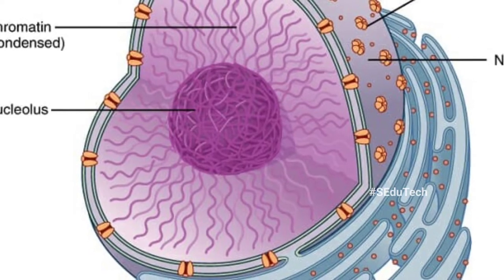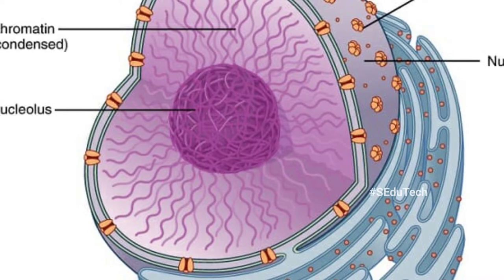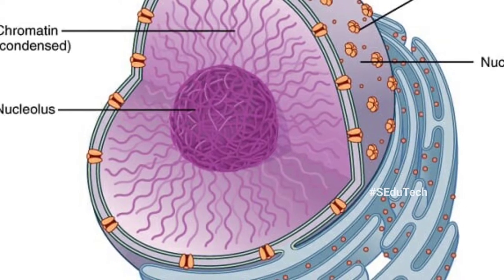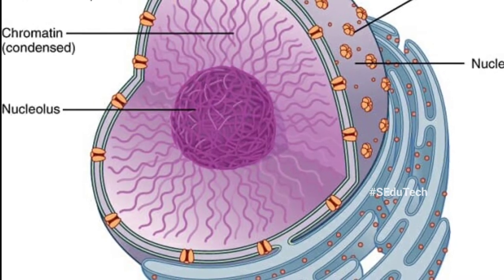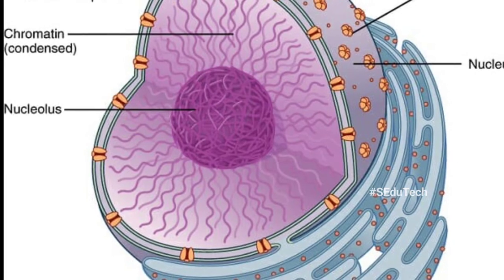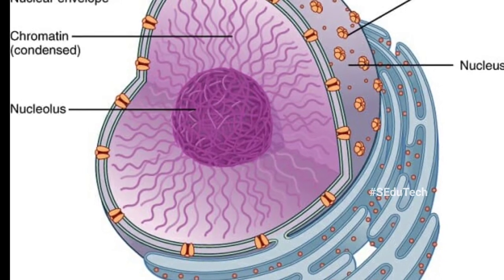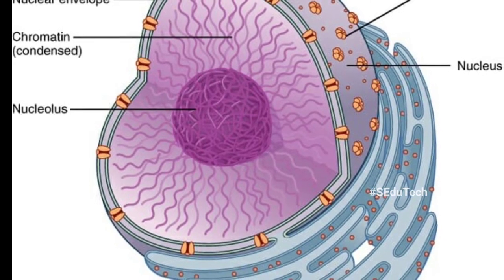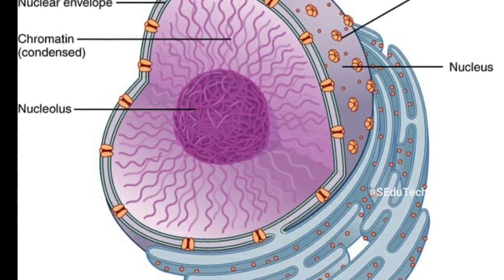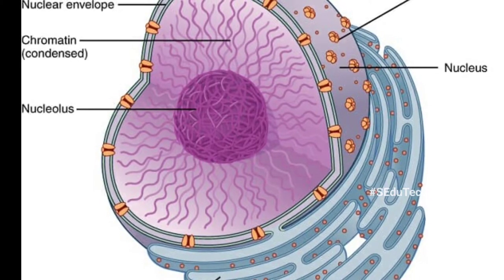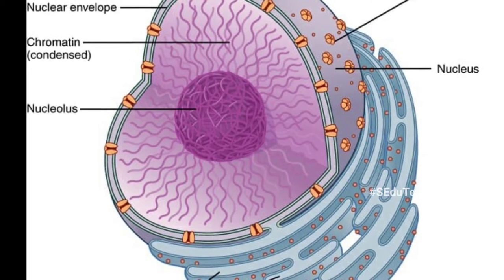The fourth part is the nucleus, the control center of the cell. It contains DNA, the genetic material that directs all the activities of the cell. Only eukaryotic cells have nuclei — which is the plural of nucleus — prokaryotic cells do not. The nucleus is separated from the cytoplasm by a specialized membrane called the nuclear membrane.